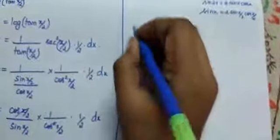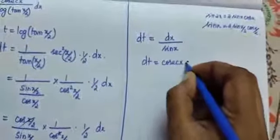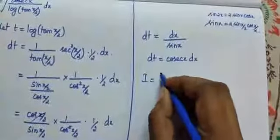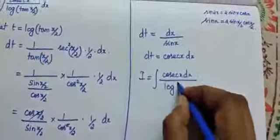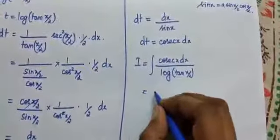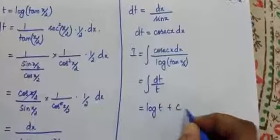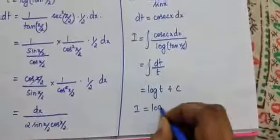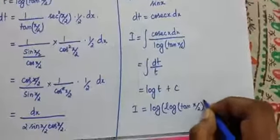So dt is equal to cosecant x dx, which means cosecant x dx equals dt. So I is equal to integral of dt divided by t, which equals log t plus c. Therefore I is equal to log of log tan x by 2, plus c. That is our answer for the 7th problem.